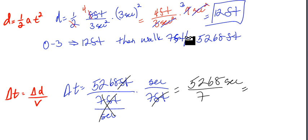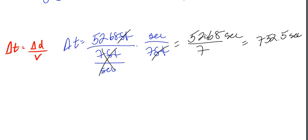And when I multiply across, I'm going to get 5,268 seconds all over 7. And when I divide that, I'm going to get 752.5 seconds.